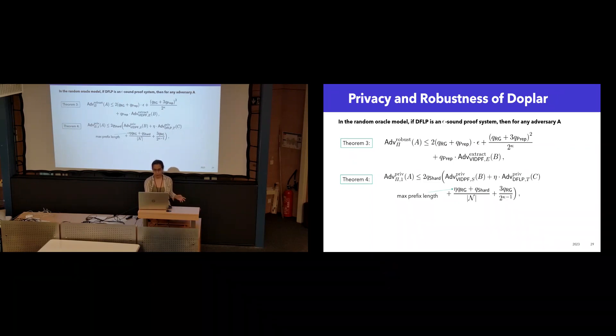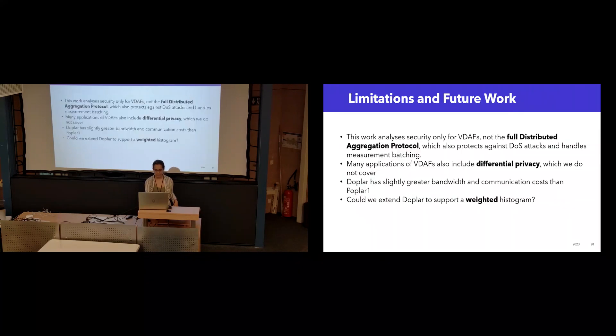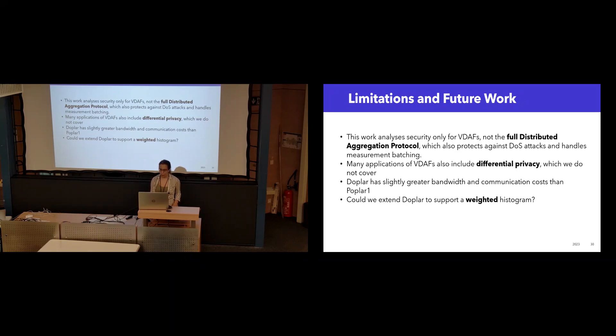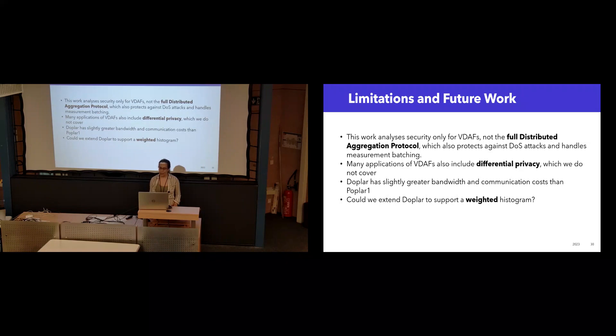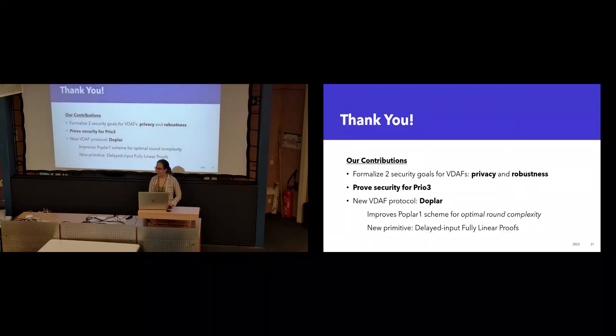So given these changes, we also proved privacy and robustness for Doppler in the same game-based model. And I guess one thing I should mention is although Doppler has reduced round complexity, it does have greater bandwidth and communication costs. So there is some trade-off there where we think that it's possible to make it more efficient, but that would require some more looking into how delayed input fully linear proofs work. Thank you very much.